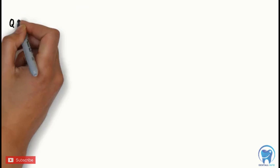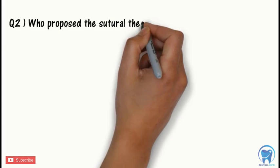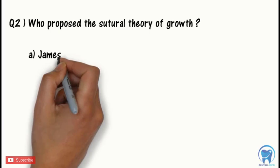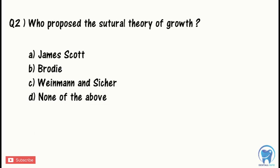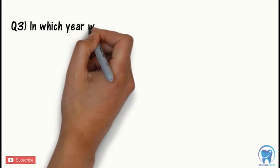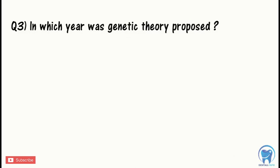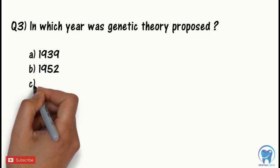Question 2: Who proposed the sutural theory of growth? Question 3: In which year was the genetic theory proposed? Option A: 1939. Option B: 1952. Option C: 1941. Option D: None of the above.